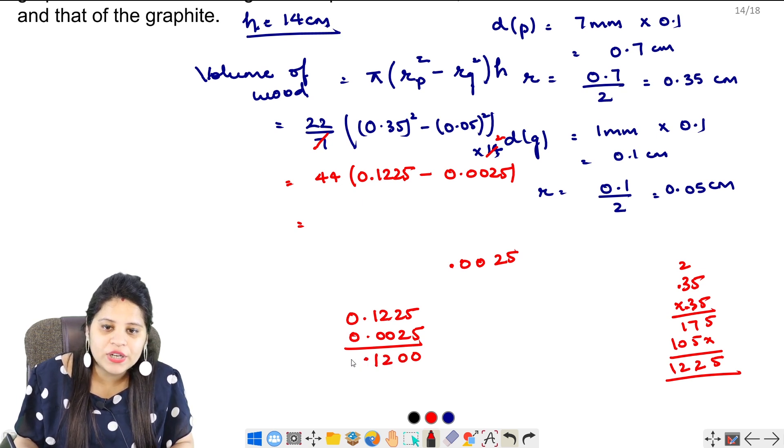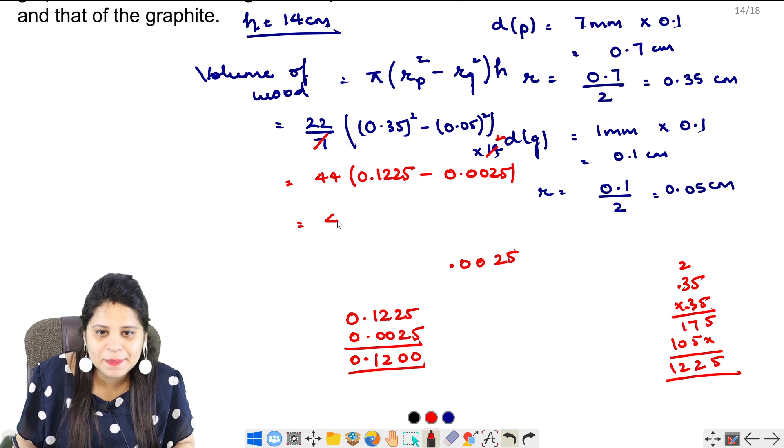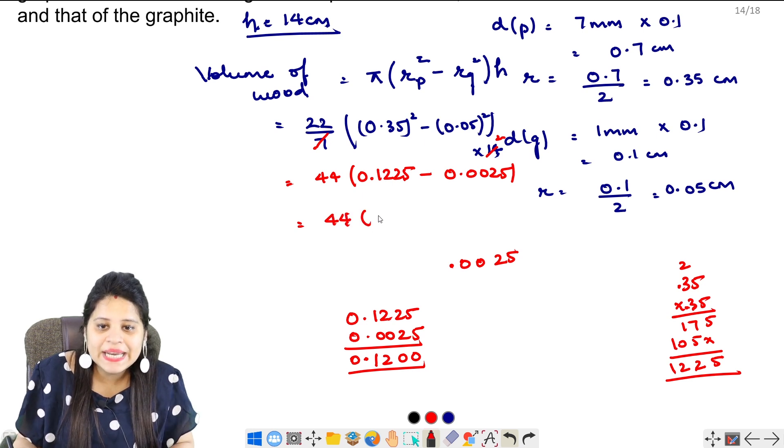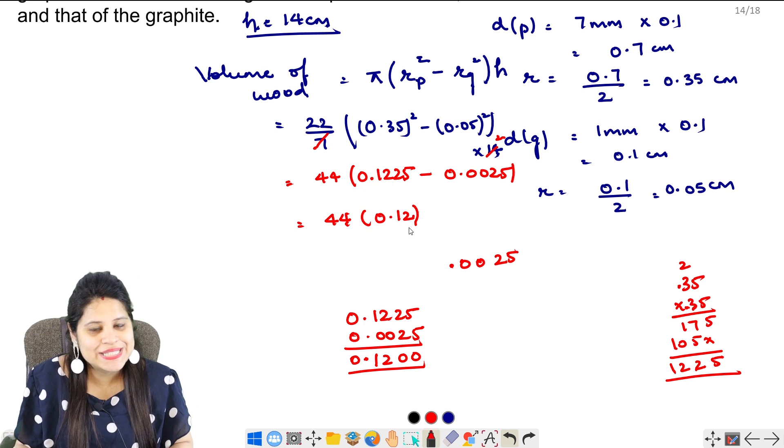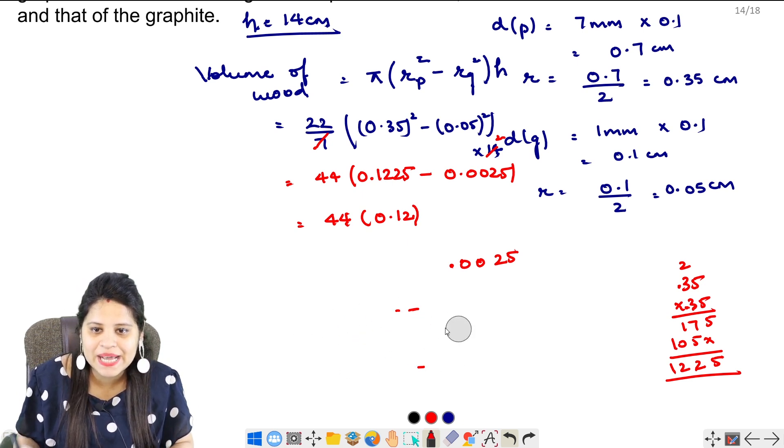Now we have to minus 0.1225 from 0.0025. So, 5 went 0, 2 went 0, 2 went 0. This is 2, 1 and this is 0. So that means we have 44 into 0.1. Okay, now we will multiply this.